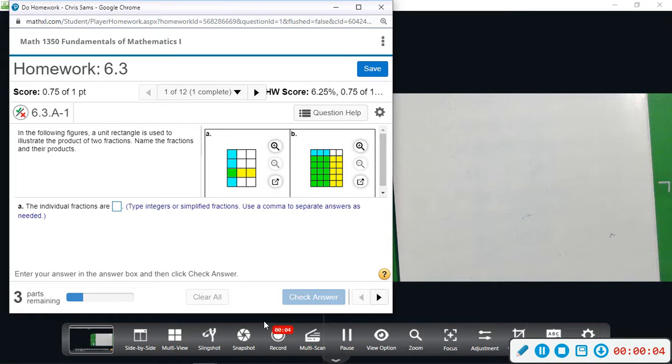Alright, section 6.3. We're going to be multiplying and dividing rational expressions or fractions. This first problem wants us to use the unit rectangle to illustrate the product of two fractions. We want to name the fractions. There's two different ones, part A and B. First, we're working on A.